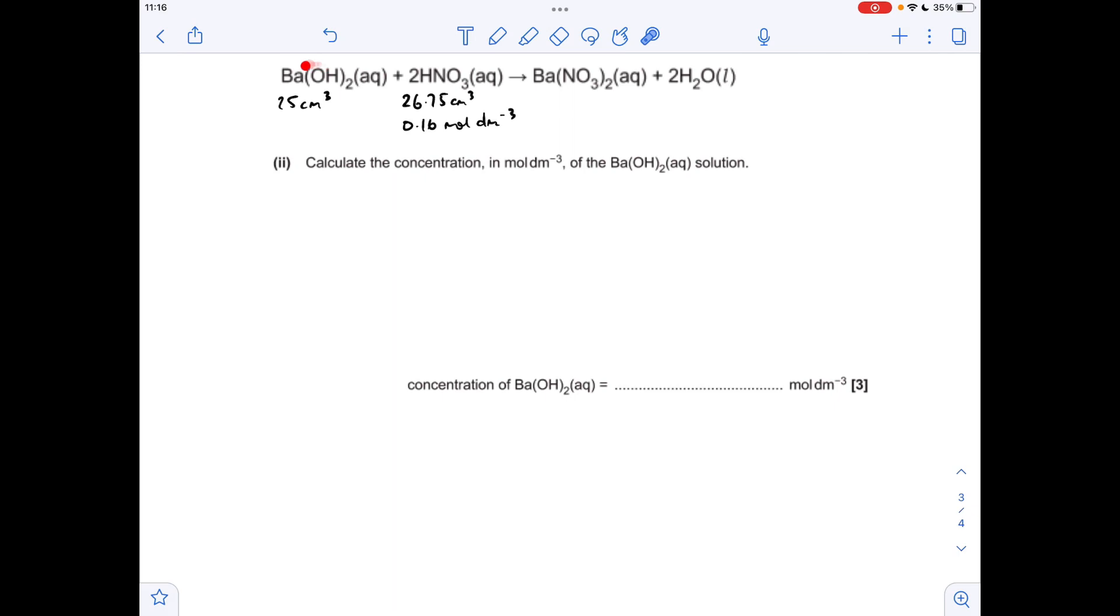We've got to calculate the concentration of this. So first thing I'm going to do is work out the moles of the nitric acid. Concentration times volume. Remember the volume has got to be in decimetres cubed. So that's coming out at 0.00428 moles.